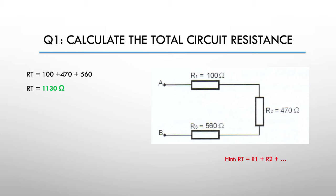And here's our answer. R total is 100 plus 470 plus 560, giving us 1130 ohms. Or you may have expressed it as 1.130k ohms or thousands of ohms.